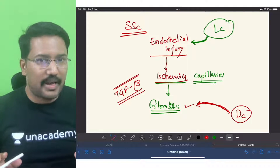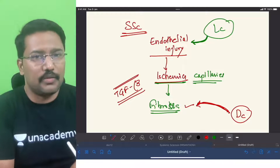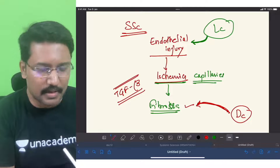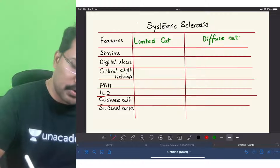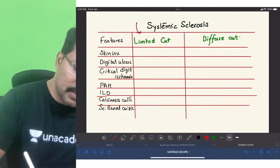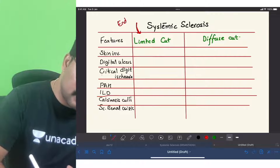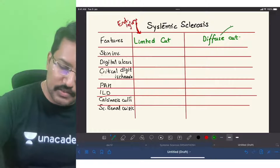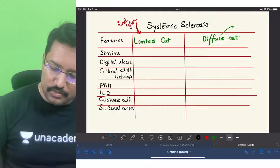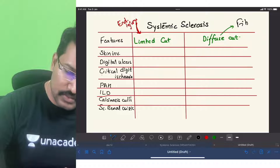This is just a hack to remember — not something to write in an exam paper. With this concept, you can answer all the questions that come from this topic. In limited cutaneous sclerosis, the dominant force causing damage is endothelial injury. In diffuse cutaneous, the dominant force is fibrosis.